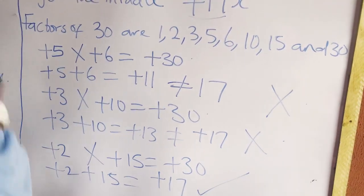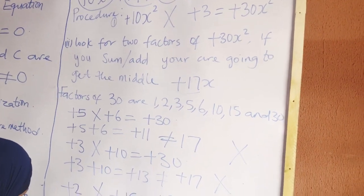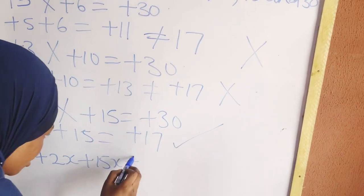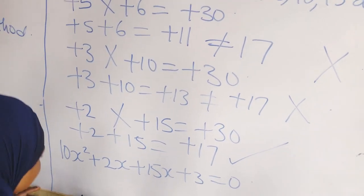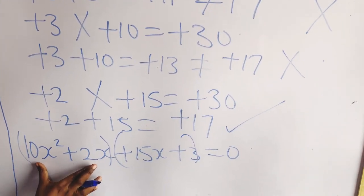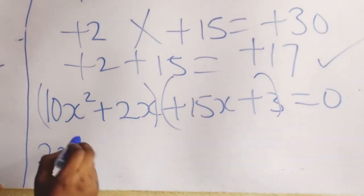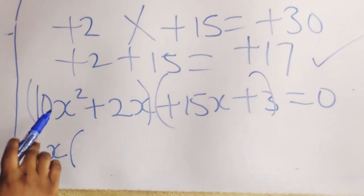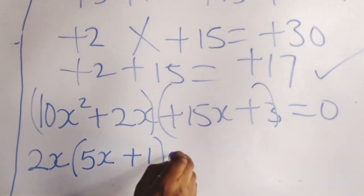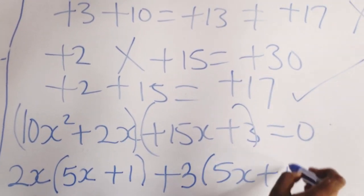Now we expand the middle. We use plus 2 and 15 instead of plus 17. So we have plus 10x squared plus 2x plus 15x plus 3 is equal to 0. Now we bracket them: there is something common to 10x squared plus 2x — 2x is common. So factorize it out: how many 2x go into 10x squared? We have 5x plus 1.